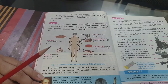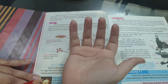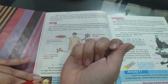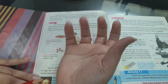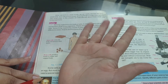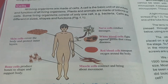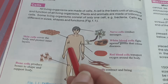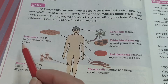I can show you in my hand — if I want to close it and then open it, it is because of the muscle cells contracting and relaxing. Next we have skin cells, which cover the body and protect the inner layers.